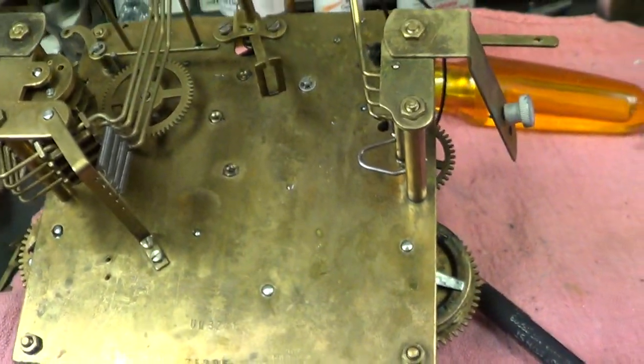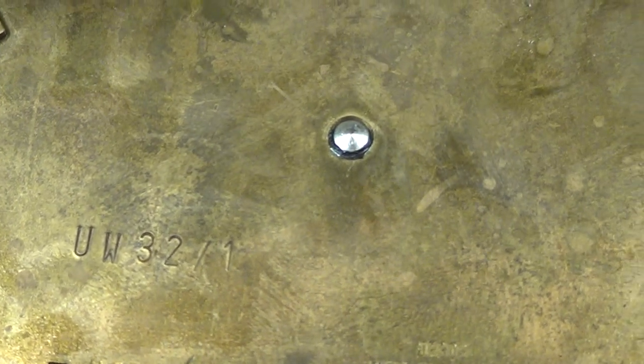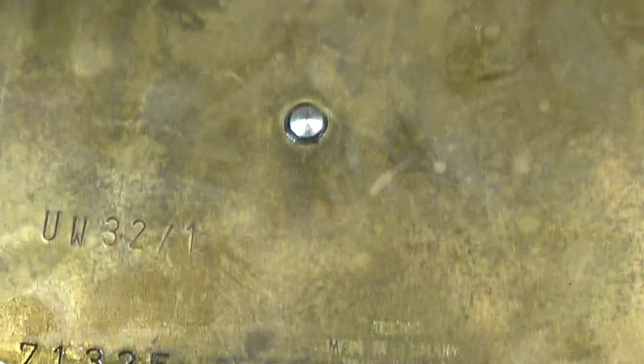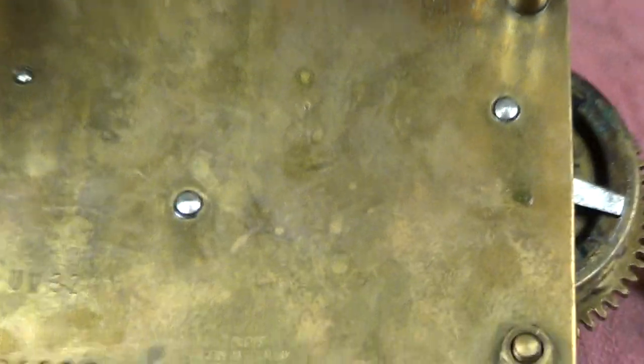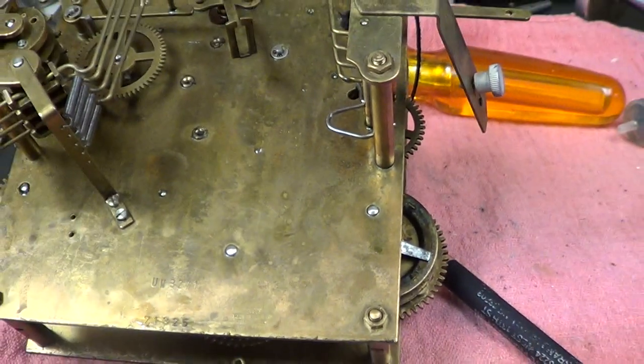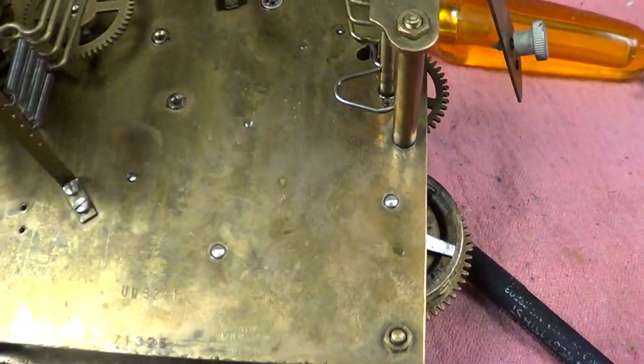Okay, on this particular one here, this is a UW 32/1 and there's a conversion number for that. A little later on in this video I have a brand new movement to replace this one. What's going on with this one here is I'm going to try and come in a little closer.